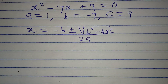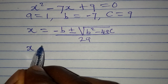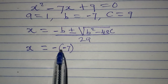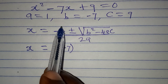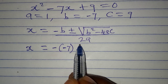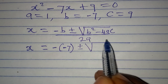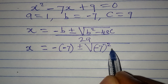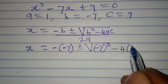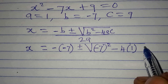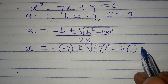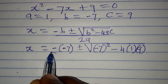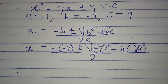This is the quadratic general formula. We are looking for x, and it's equal to minus minus 7 — because b is minus 7 — plus or minus square root of b squared, which would be minus 7 squared, then minus 4 times a, which is 1, times c, which is 9. The whole of this is over 2 times 1, which is 2.